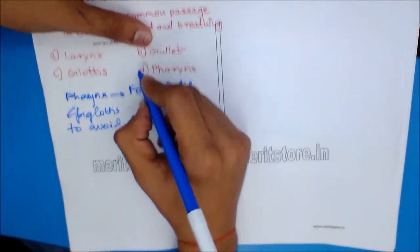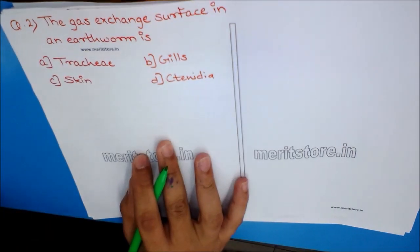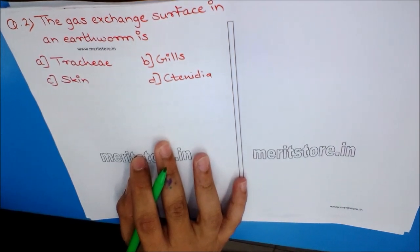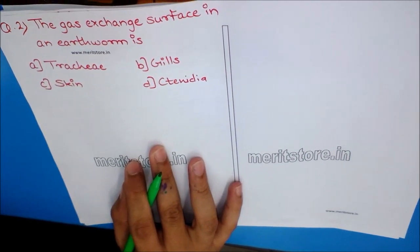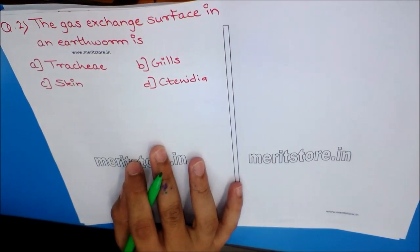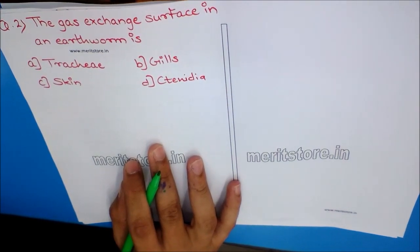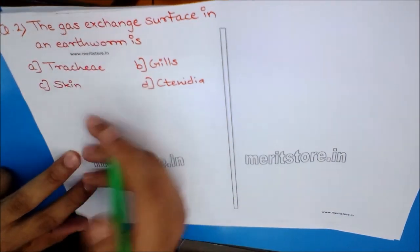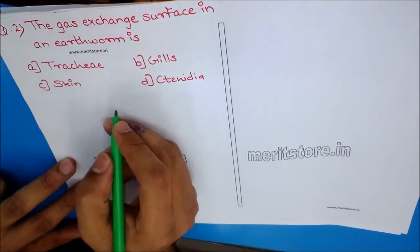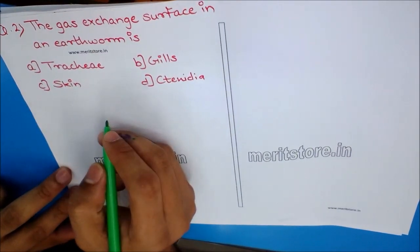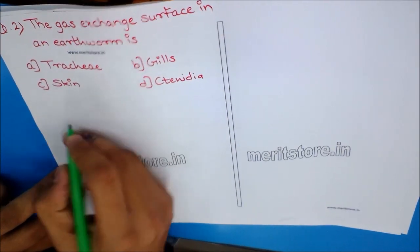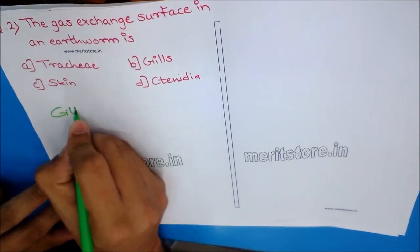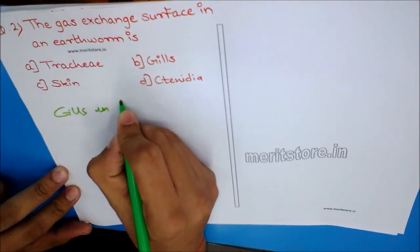Question 2: The gas exchange surface in an earthworm is? Options: A) Trachea, B) Gills, C) Skin, D) Conidia. Different structures are provided in different organisms for gas exchange — for example, gills in aquatic animals or fishes, and lungs in vertebrates like humans.